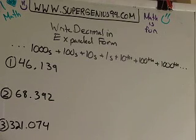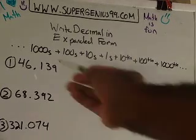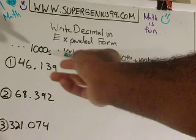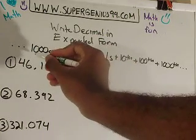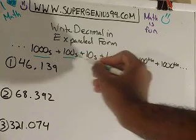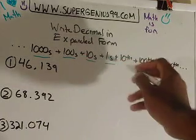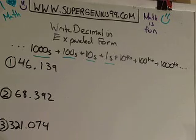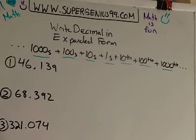So how do you write a decimal in expanded form? Basically the outline is right here. You just start at the highest whole number, like thousands, and then you just keep on going — thousands, hundreds, tens, ones — and then when you get past the ones place, it's basically tenths, hundredths, thousandths, and so on. Let's look at an example.